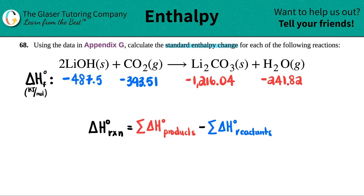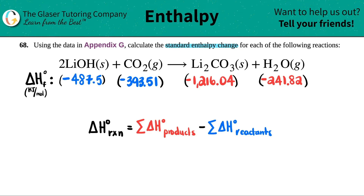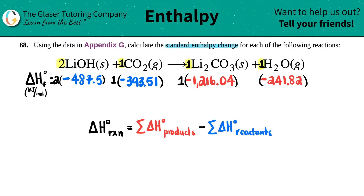All you have to do is multiply each delta H value by the coefficient from your balanced equation. I know it's balanced because I can see the coefficients. You could pause the video to double-check, but I'll assume it's balanced. So LiOH is multiplied by 2, CO₂ has no coefficient so it's multiplied by 1, and the same goes for Li₂CO₃ and H₂O — each multiplied by 1.